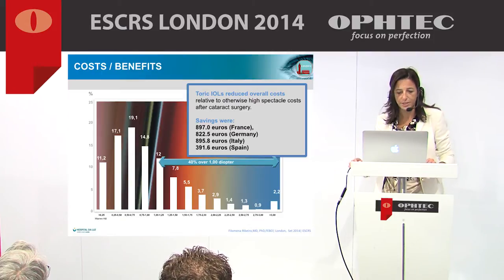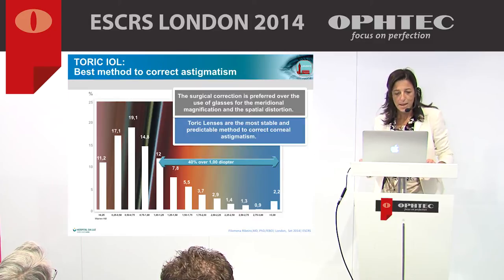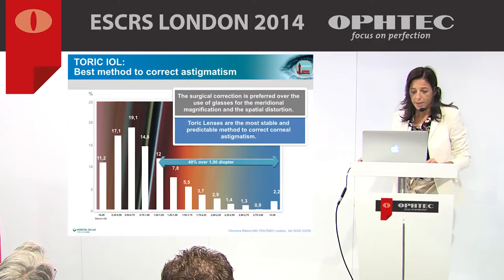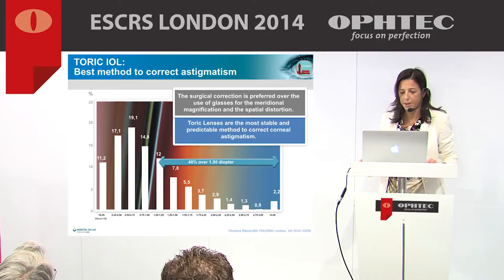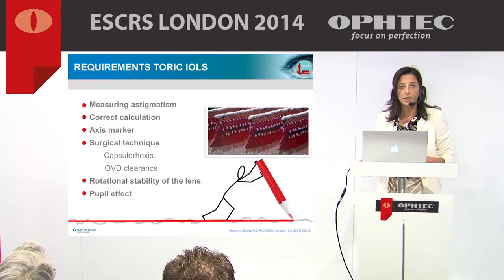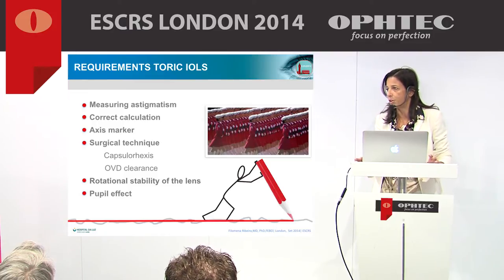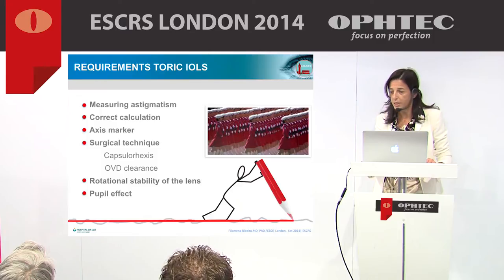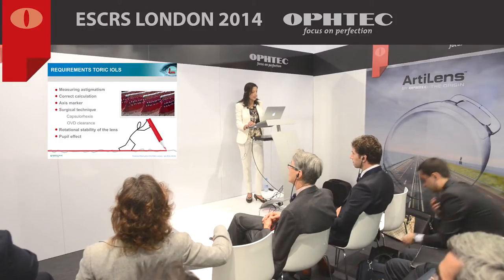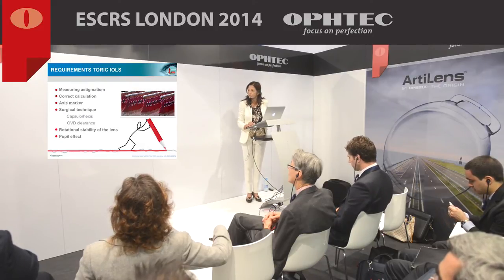These results can inform physicians and patients regarding the value of toric IOLs in the treatment of cataract and astigmatism. It is well known that toric IOLs can provide better visual outcomes and are the most stable and predictable way to correct astigmatism. The surgeon should keep in mind that proper patient selection, precise astigmatism measurement, IOL calculation, IOL placement, and IOL rotational stability are essential for success.